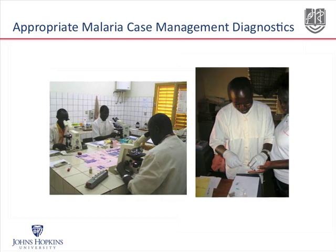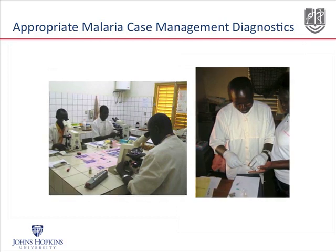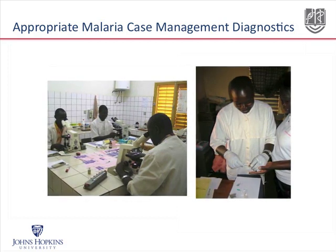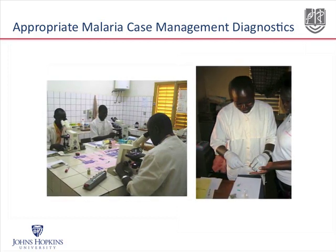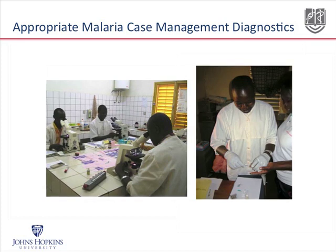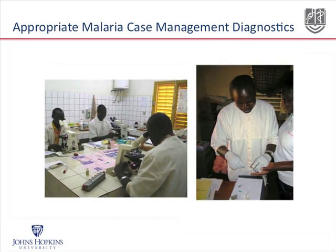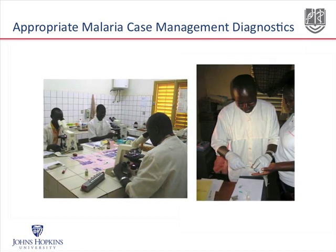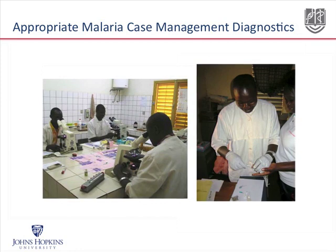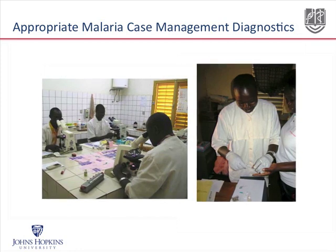There are two main ways of doing diagnostics in a typical clinic. One, if you have a laboratory and microscopes, you can look at blood films to identify the parasites.